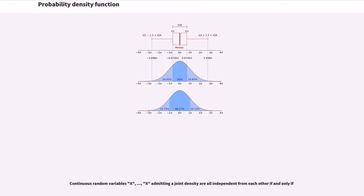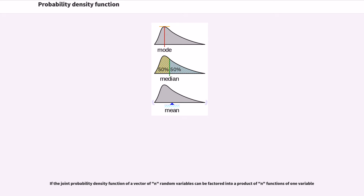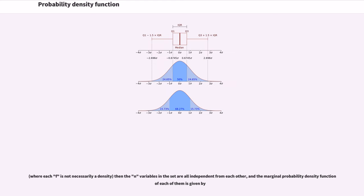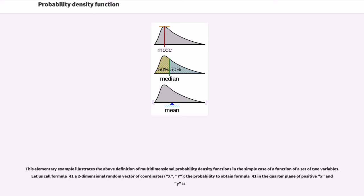Continuous random variables X₁, X₂, … admitting a joint density are all independent from each other if and only if the joint probability density function of the vector of n random variables can be factored into a product of n functions of one variable. In that case, the marginal probability density function of each of them is given by the corresponding factor. As an elementary example illustrating multidimensional probability density functions, consider a two-dimensional random vector of coordinates; the probability of obtaining a result in the quarter-plane of positive x and y is given by the double integral of the joint PDF over that region.